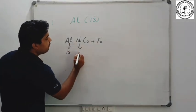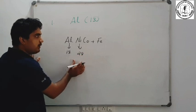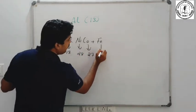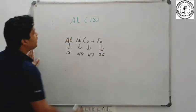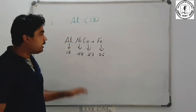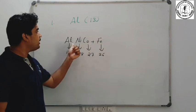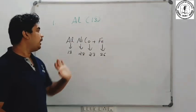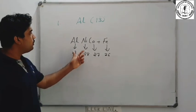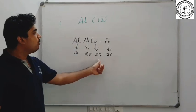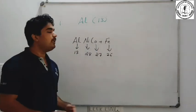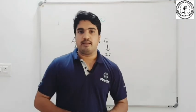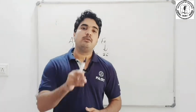The atomic number of nickel is 28 and cobalt is 28. The atomic number of iron is important. Aluminium is 13, nickel is 28, cobalt is 28, and iron is 26. Aluminium is another element to note.